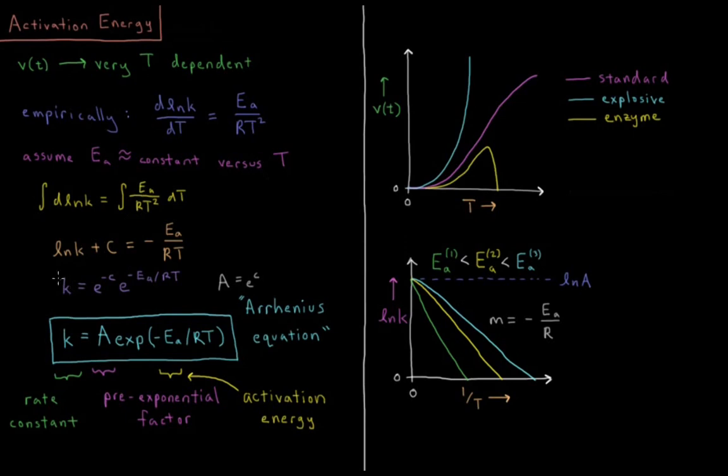So if we take both sides to the E power, what we can get is to rearrange this equation to the rate constant equals E to the minus constant C times E to the minus Ea over RT. But since this constant C was just some arbitrary constant to begin with, E to the minus C is also just some other arbitrary constant. So we'll redefine that constant as a value that we're going to call A. Here we can tell from this empirical relationship that our rate constant equals some constant times the exponential of negative activation energy divided by gas constant times temperature.